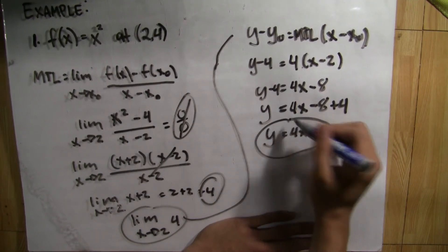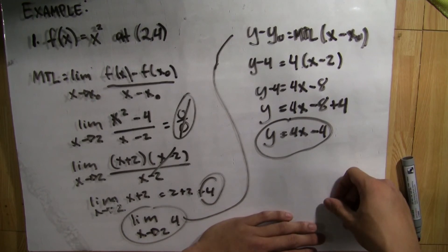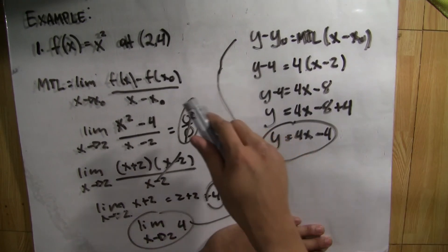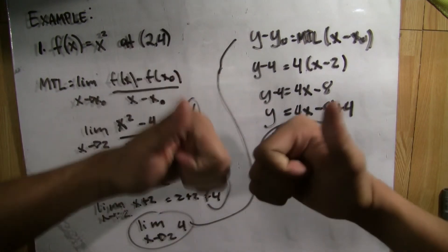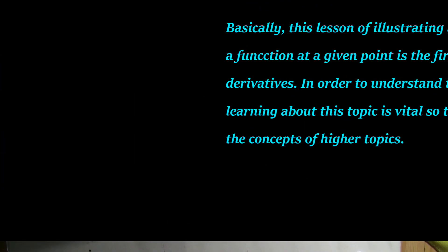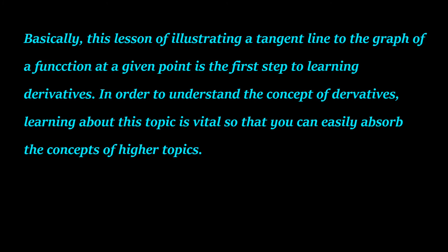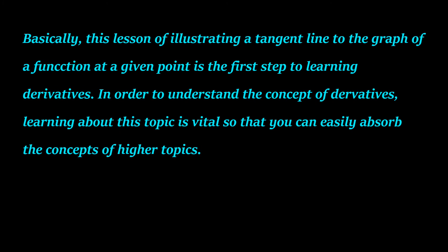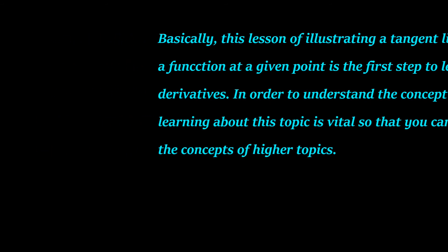And here guys is the equation of the tangent line at the function x-squared at the point of tangency (2, 4). Basically, this lesson of illustrating a tangent line to the graph of a function at a given point is the first step to learning derivative. In order to understand the concept of derivatives, learning about this topic is vital so that you can easily absorb the concepts of higher topics.